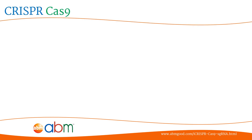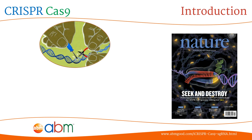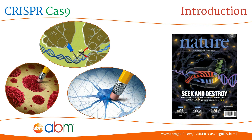For the first time, scientists are able to precisely edit any part of the human genome the way they wanted, thanks to the groundbreaking technology called CRISPR. Since its discovery, CRISPR has revolutionized genetic engineering with its molecular scissors that can selectively disable or change genes in human cells, providing promising gene therapy treatments for cancer and inherited genetic disorders.